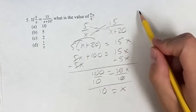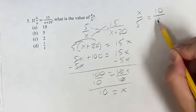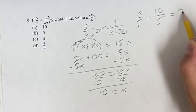So what is the value of x over 5? Well, x over 5 is equal to 10 over 5, since x is equal to 10. 10 divided by 5 is 2.